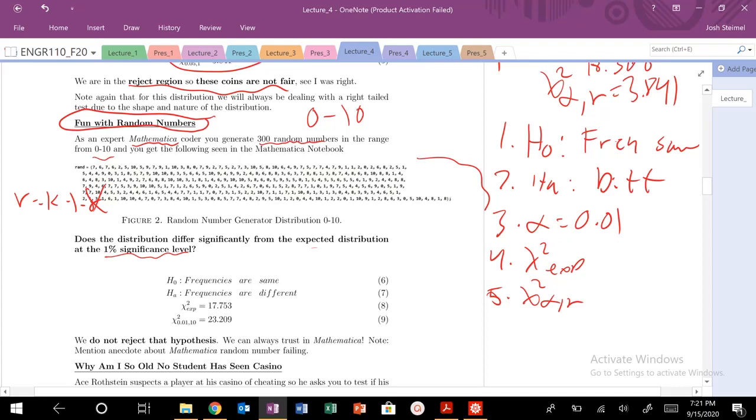But what are our number of outcomes? Is k 300? No. We can generate numbers between 0 to 10 with equal probabilities. That is basically the number of possible outcomes, the number of variables, is k equals 11. So if k equals 11, we know that our nu is equal to 10.